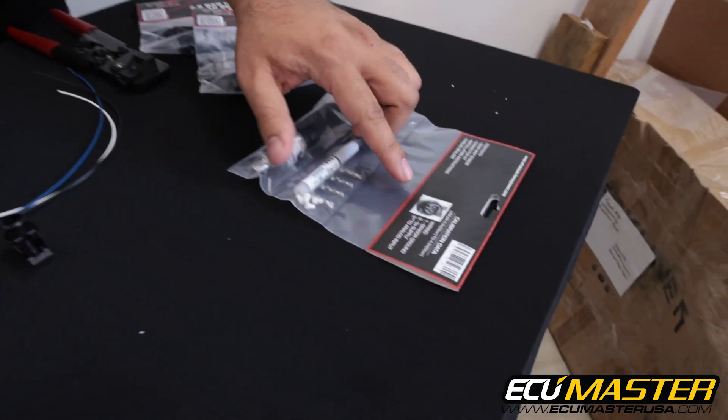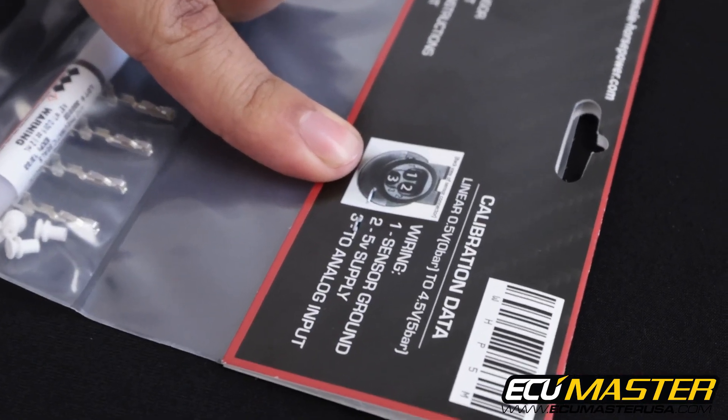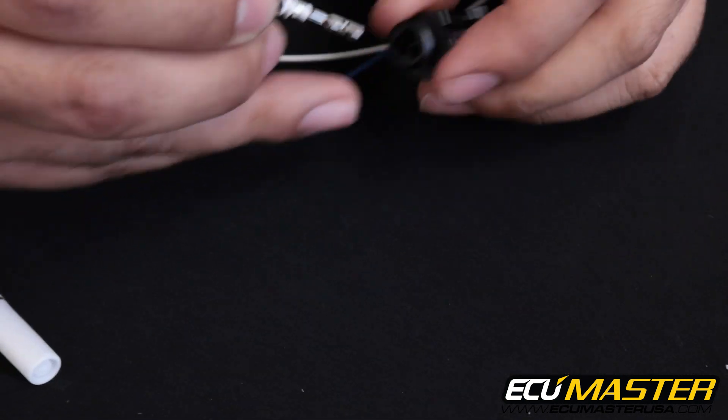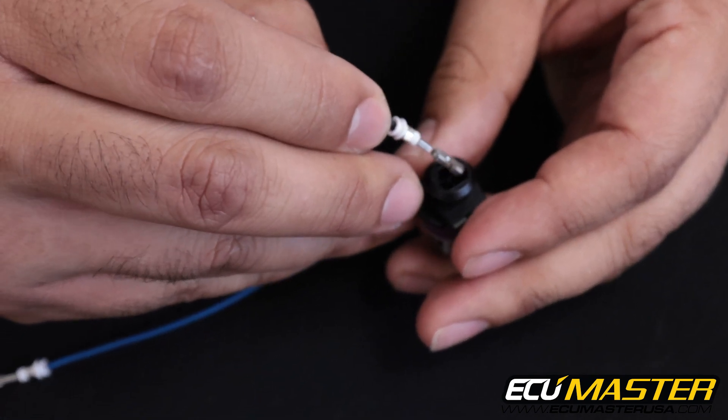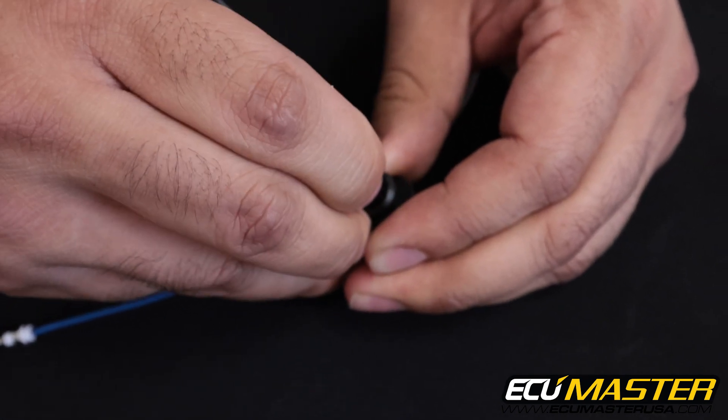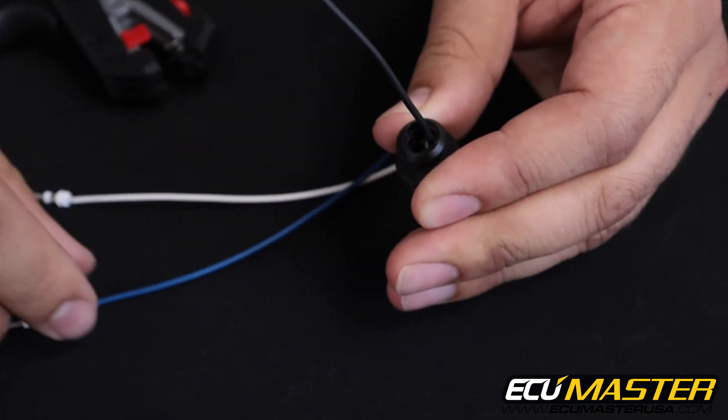Let's take our package and look at the back side for our sensor pinout. So we'll start with position one, which is our sensor ground. That is this hole here. Insert the terminal in until it clicks. Nice positive location there.